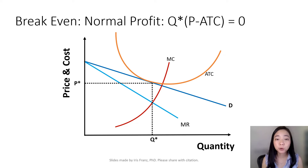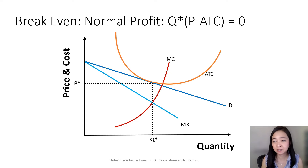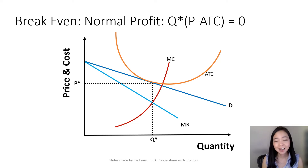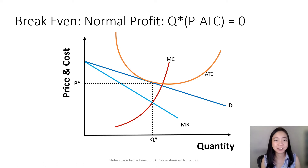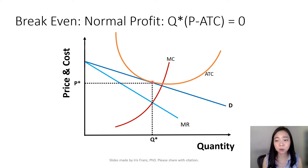In the short run, it is also possible that you break even, meaning you are making a zero economic profit, also known as the normal profit. This happens when your price is equal to average short-run cost. Here we use exactly the same method as before: we set marginal revenue equal to marginal cost, find the optimal quantity Q star, and go back to our demand curve to find the price P star. At this quantity Q star, your price P star is exactly equal to your average total cost, and therefore your firm is making a zero economic profit — your firm breaks even.